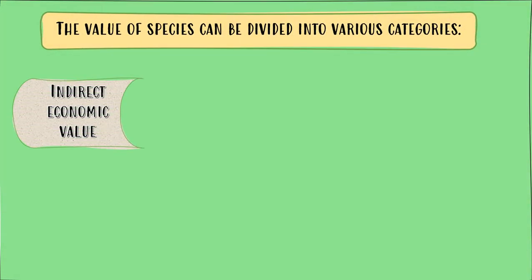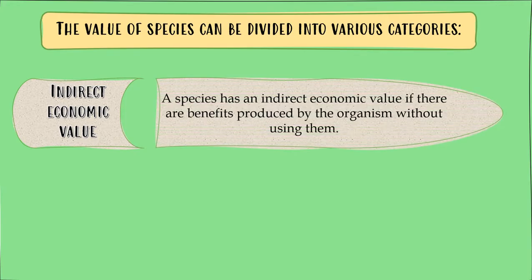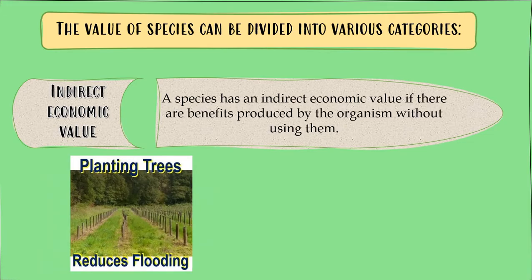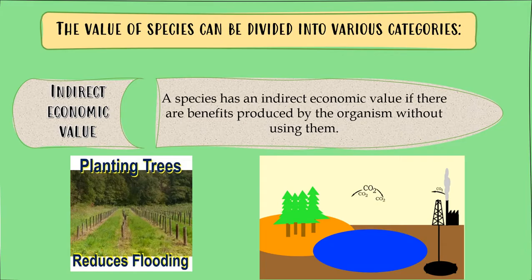Next is indirect economic value. A species has an indirect economic value if there are benefits produced by the organism without directly using them. These are organisms we don't utilize directly but play an important role in our environment. For example, planting trees to reduce flood, prevent landslide and soil erosion. Trees also absorb carbon dioxide in the air, which is essential for photosynthesis.